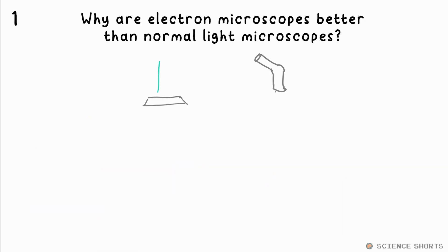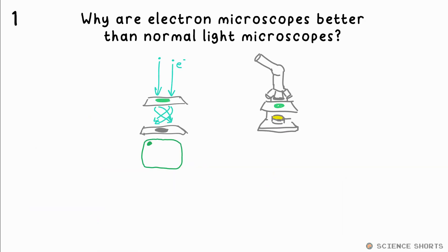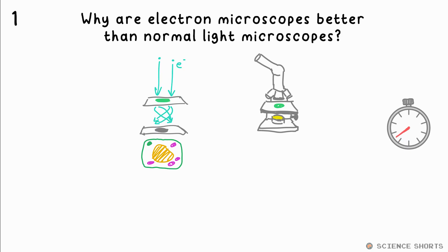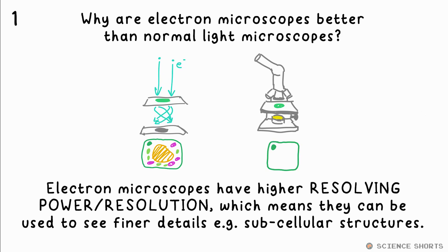Question 1. Why are electron microscopes better than normal light microscopes? They have higher resolving power or resolution, meaning they allow finer details to be visualised, like cell organelles and subcellular structures.